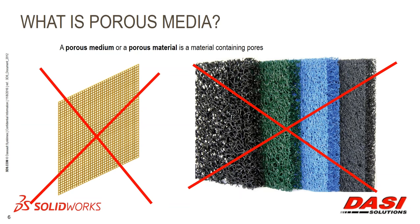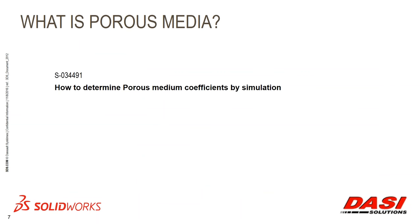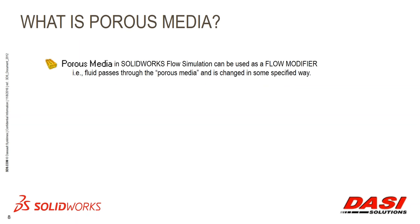Those components I'm really looking at don't necessarily contain what we'd typically call pores. If you're interested in more information on how you can simplify porous structures, there is a knowledge-base article you may want to look up - it'll walk through how you can simplify those common porous-type structures. But for this presentation, I'm going to use porous media as a flow modifier. When fluid passes through what I define as a porous media, the fluid will be changed in some specified way - in the cases I'll be looking at, I'll be changing the pressure, creating a pressure drop, or changing the temperature.